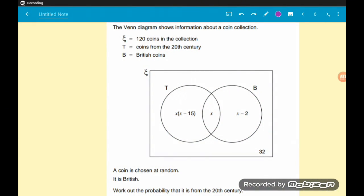Hey guys, how's it going? Here we've got another really fun Venn diagram question. Our universal set is 120 coins in a coin collection. T are coins from the 20th century, B are coins that are British.